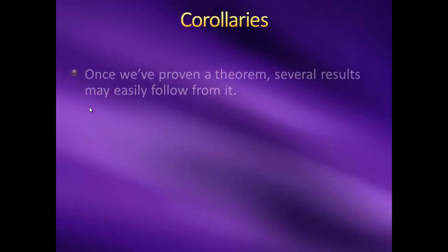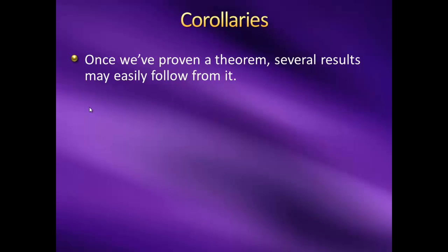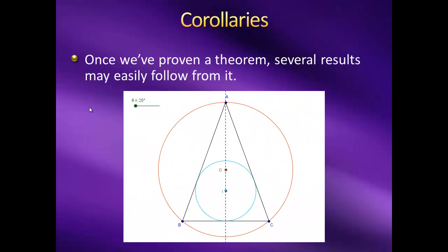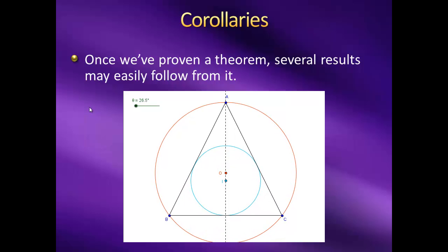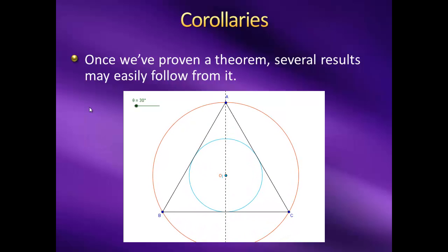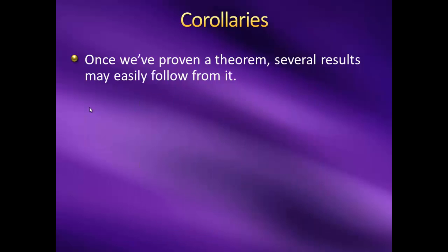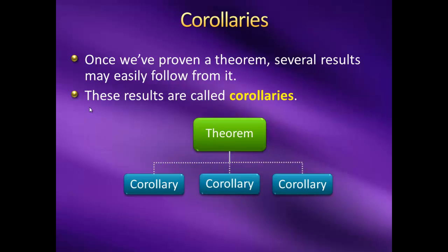Once we've proven a theorem, sometimes a number of other results follow very easily from it. For example, let's say I've proven that in an isosceles triangle, the circumcenter and in-center lie on the same line. In that case, since an equilateral triangle is a special kind of isosceles triangle, it's easy to show that the same is true for equilateral triangles. In fact, the circumcenter and in-center will be the same point. When we show that a result very easily follows from a theorem we just proved, we call it a corollary of that theorem. Often in textbooks, when a theorem has been proven, a number of corollaries will be laid out right after it, and we'll apply the theorem to a number of useful contexts.